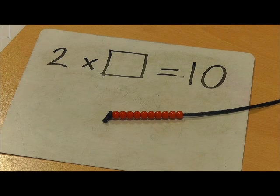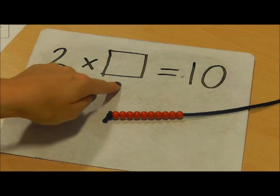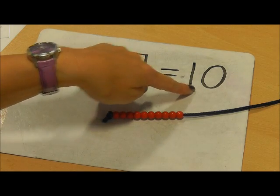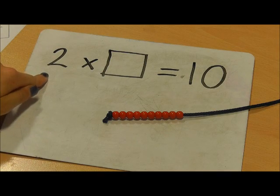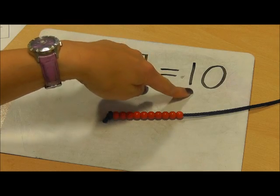In this multiplication I can use the bead string again. 2 multiplied by something equals 10. 2 how many times equals 10.